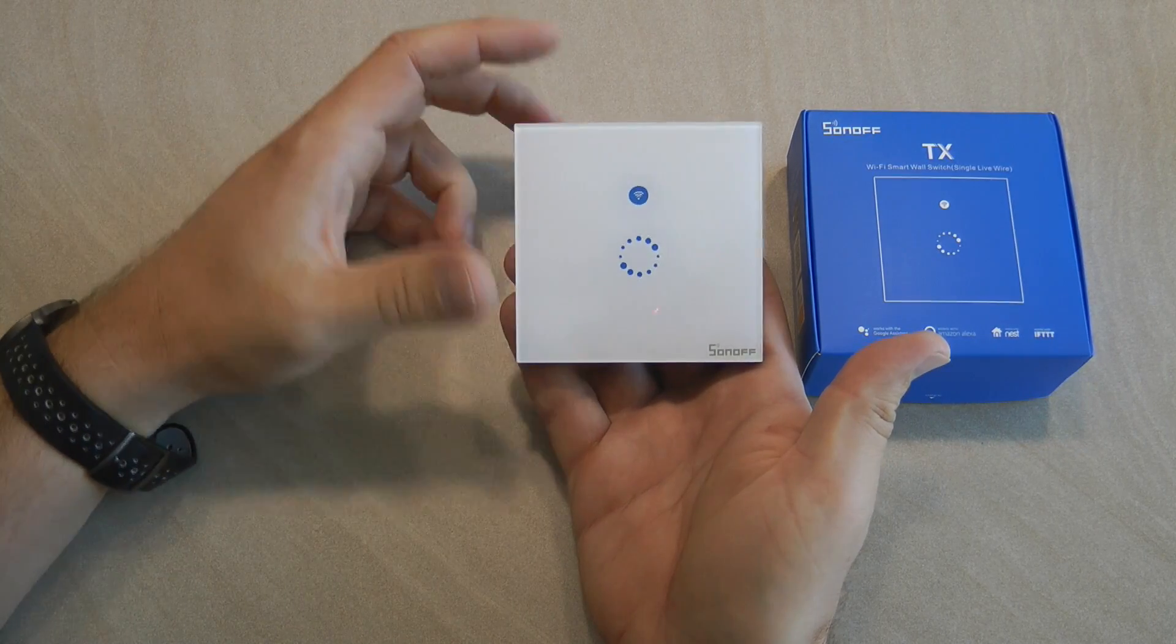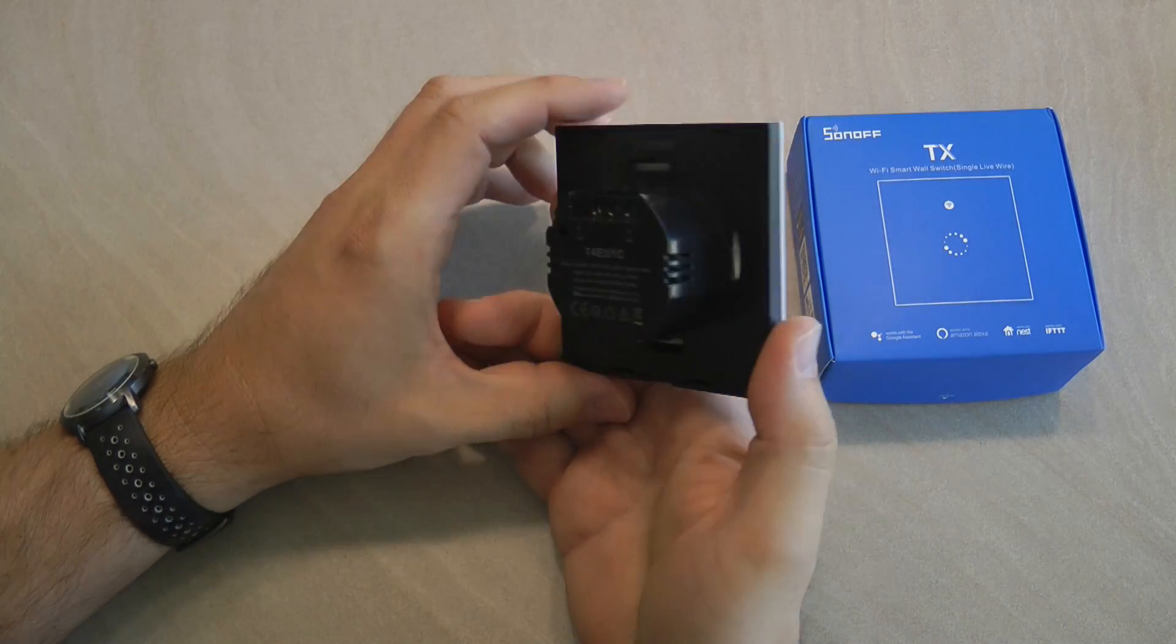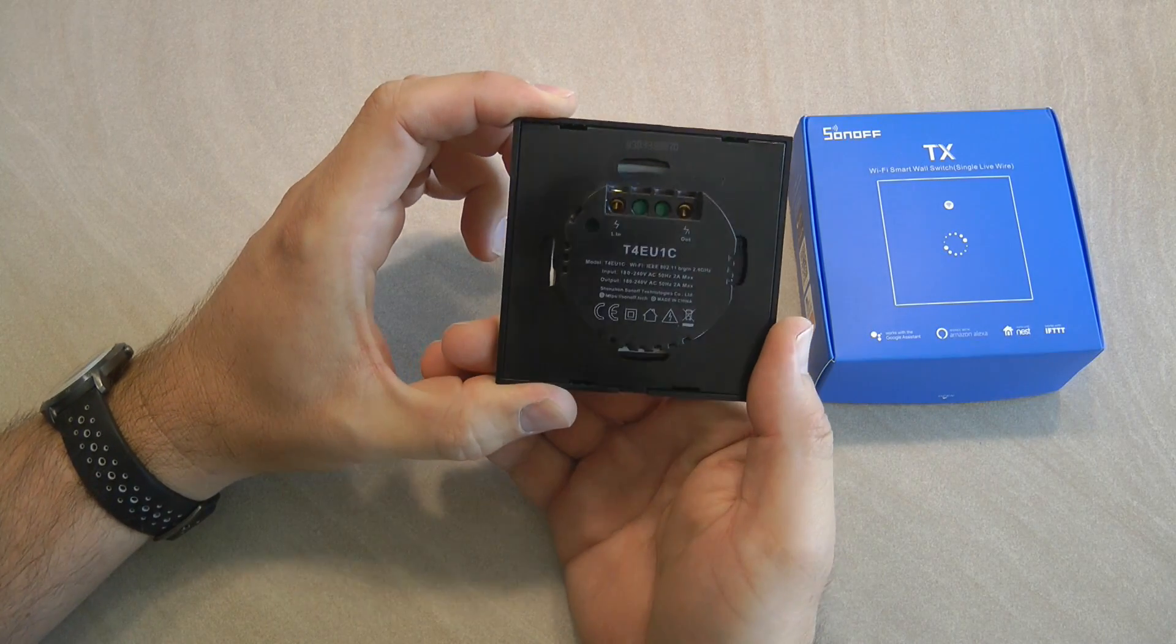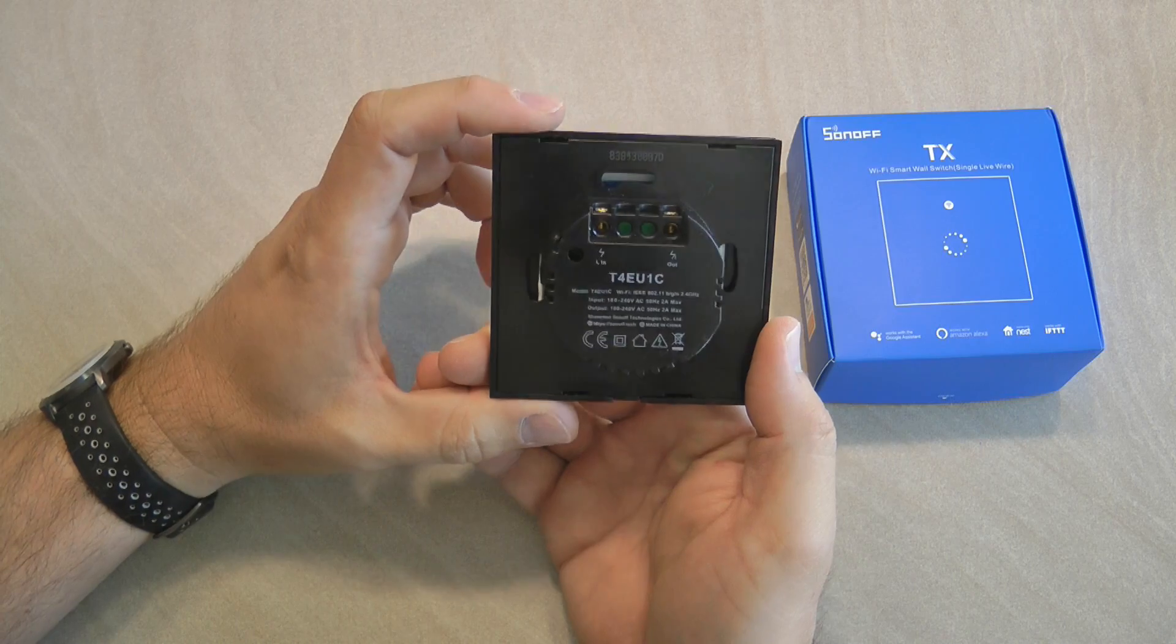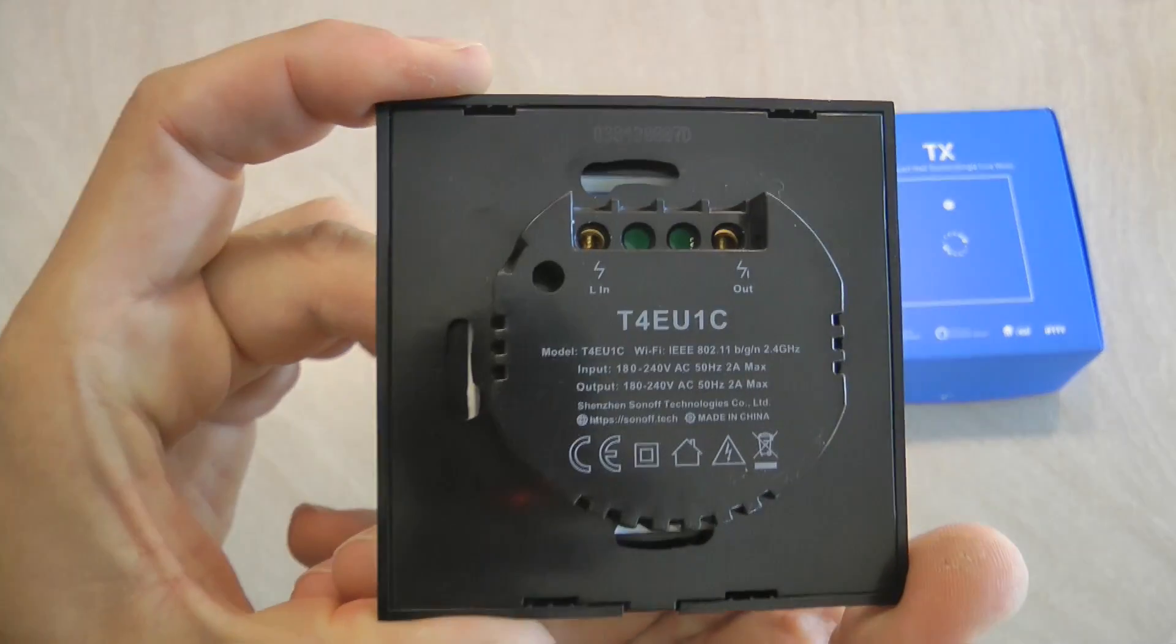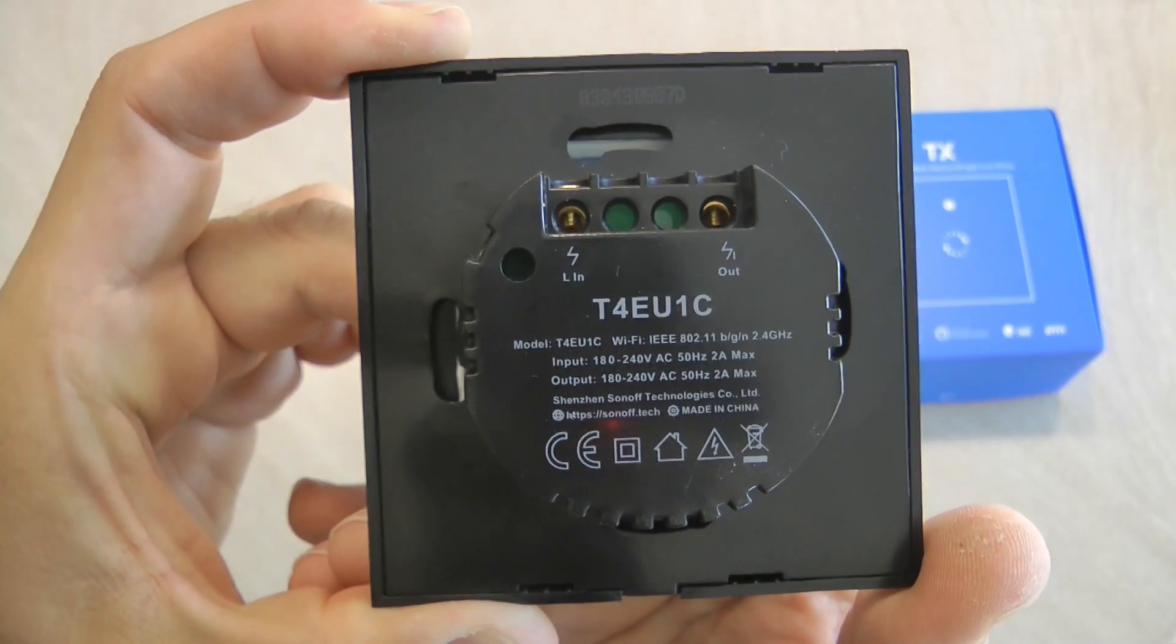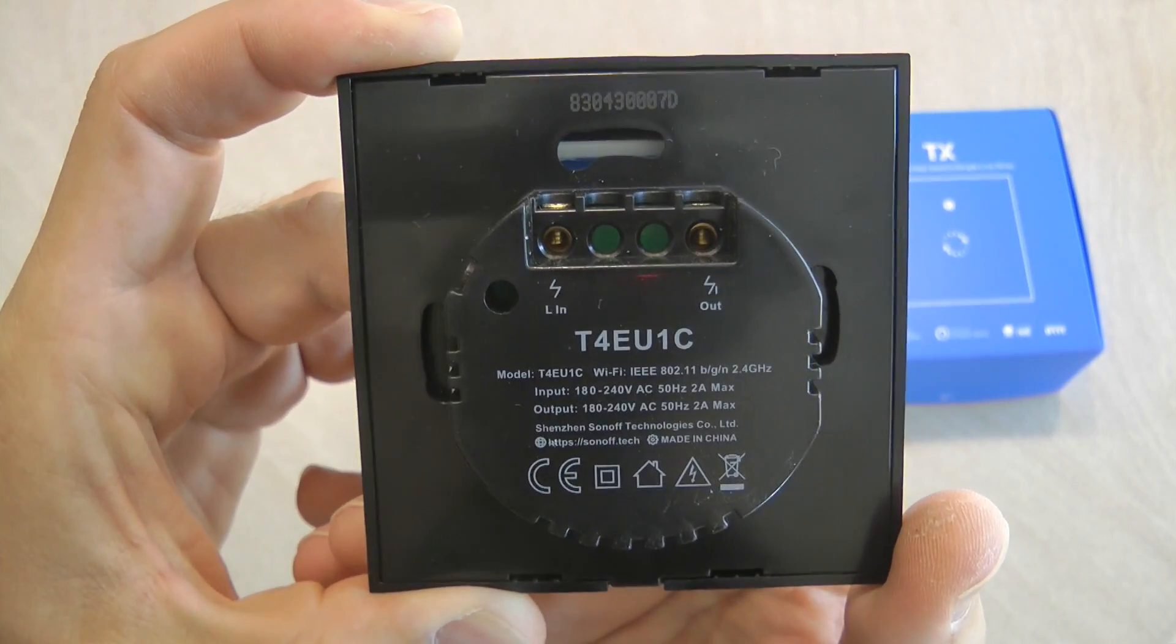If I flip it around, well you don't see anything yet because it still appears just like any other TX series smart wall switch. But if I bring this a little bit closer and you start paying attention to the connections, you can see that as opposed to the regular light switch where you would have at least three connections - a live in, a neutral, and a live out or L1 out - you only have two.